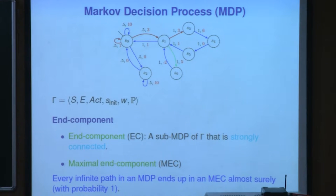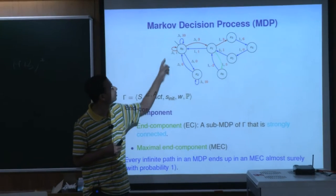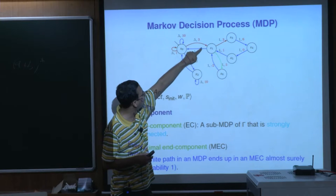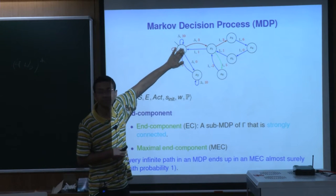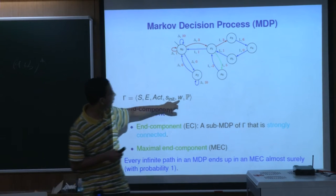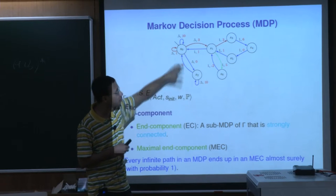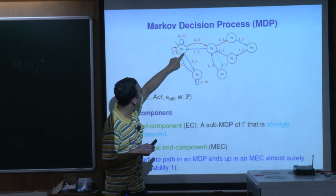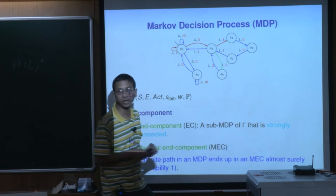We study these functions over Markov decision processes. An MDP is defined by a tuple where S is a set of states, E is a set of edges, act is the set of actions — for example in this diagram the actions are a brown, a blue, or a green action. S_init is an initial state, here S0; W is a function assigning weights to edges; and P is a probability distribution mapping a state and action to the outgoing edges. For example, choosing the brown action from S0 assigns probability 0.5 to each outgoing edge.